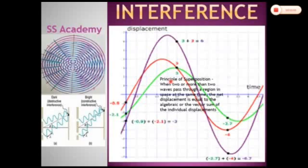According to the principle of superposition, when two or more waves pass through a region in space at the same time, the net displacement is equal to the algebraic or vector sum of the individual displacements. This will be more elaborated in the next slides.